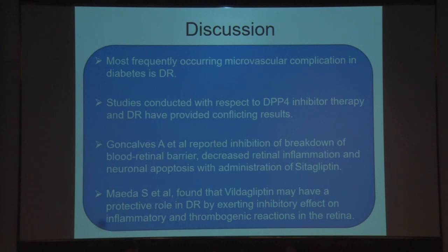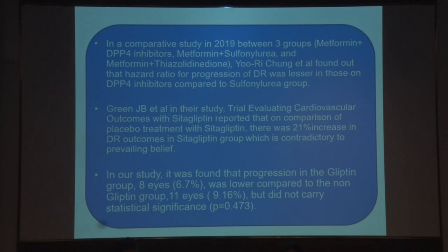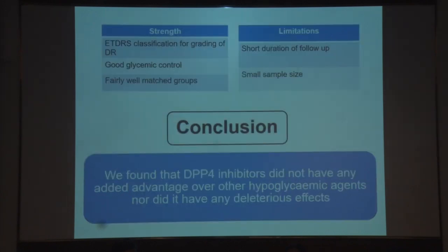Most studies favor a neuroprotective benefit of gliptins but could not prove statistical significance. Green JB's study showed contradictory results — the sitagliptin group had more progression than the placebo group. The gliptin group in the present study had lesser DR progression but not statistically significant. Strengths include good glycemic control, comparable groups, and use of ETDRS classification. Limitations include smaller sample size and shorter follow-up. The conclusion is that DPP-4 inhibitors did not show added advantage over other hypoglycemic agents, and a larger study with longer follow-up is recommended.